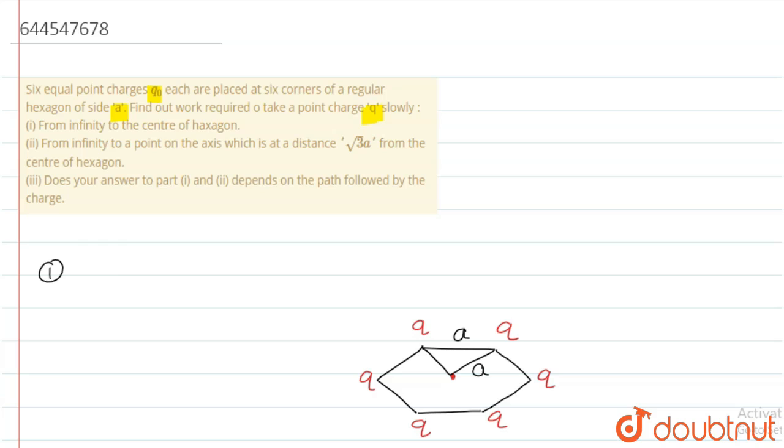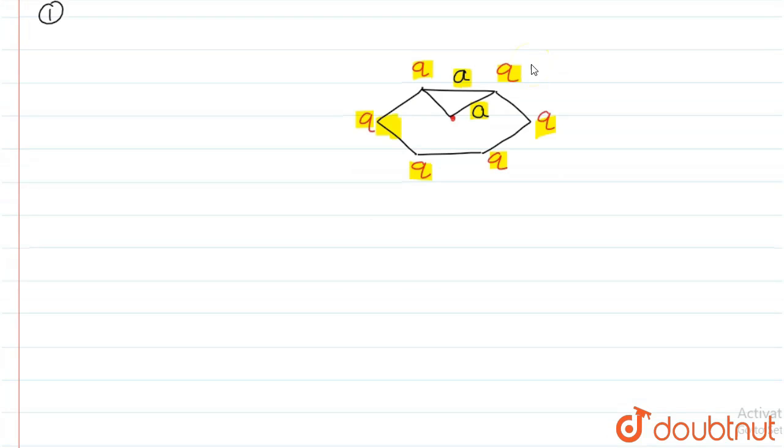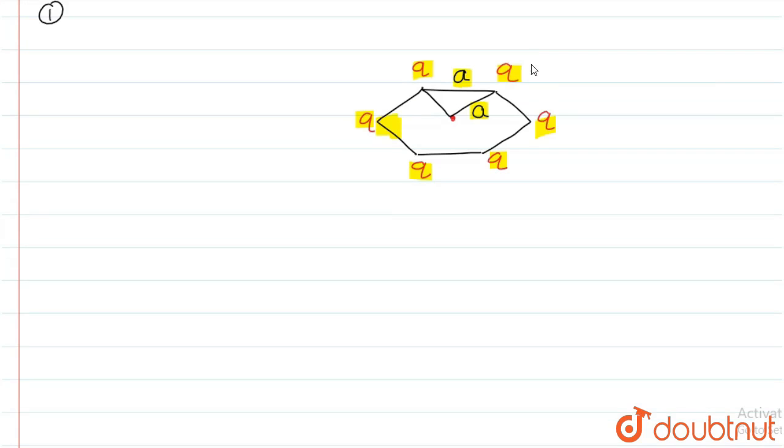Now, first of all, I have to solve part 1. This is a regular hexagon. Six point charges are placed at the corners of the regular hexagon. This is the side a of the hexagon. We have to find the work done to take the charge from infinity to the center of the hexagon.